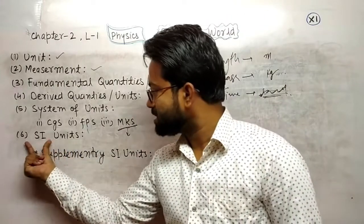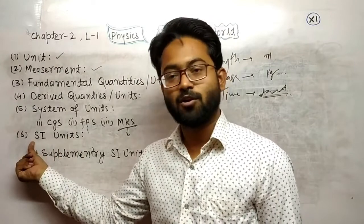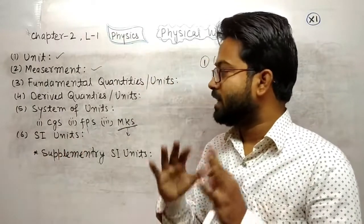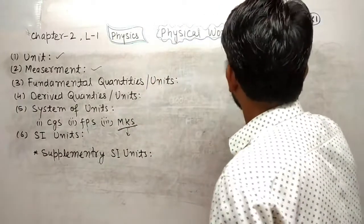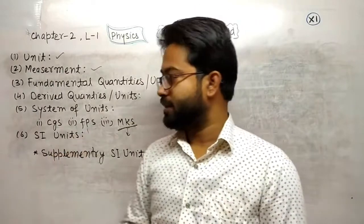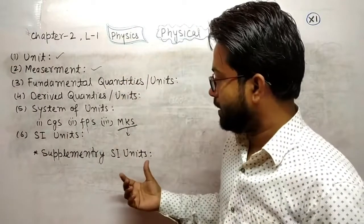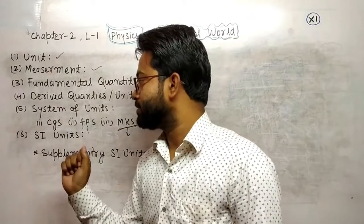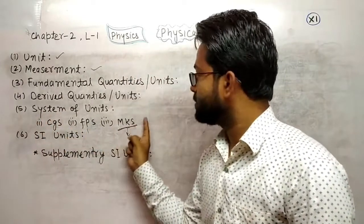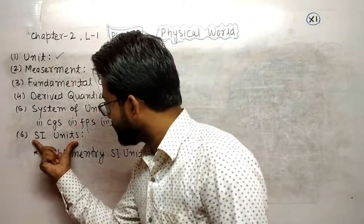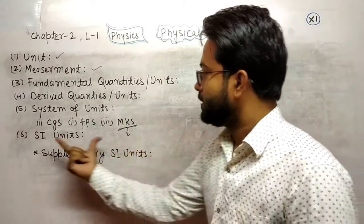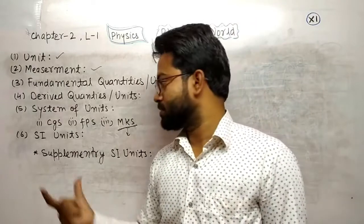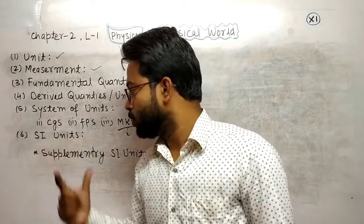Next point is SI unit — the International System of Units, not System of International Units. This is the system used by all countries; it is a common unit for all countries. CGS, FPS, and MKS were the old systems of units and are no longer in use. SI unit is used everywhere nowadays. It contains seven fundamental and two supplementary units or quantities.